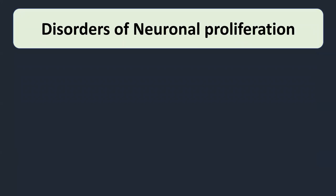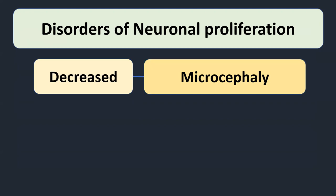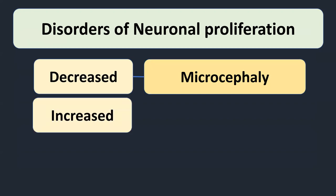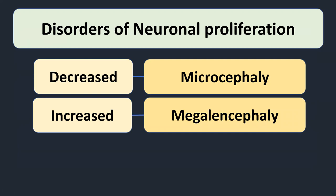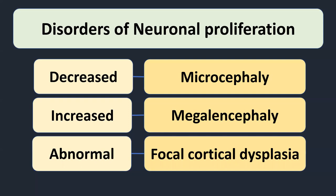What happens when something goes wrong in neuronal proliferation? We can have not enough proliferation, or too much apoptosis of the neuronal progenitor cells, leading to microcephaly. We can have too much proliferation or not enough apoptosis, leading to megalencephaly. Or we can have normal proliferation but of abnormal cells — those abnormal cells then migrate to the developing cortex and give rise to so-called focal cortical dysplasias. We'll walk through each entity one by one.